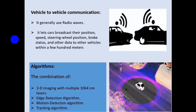Vehicle-to-Vehicle Communication. This is very important for communicating between vehicles on the road to prevent accidents. It generally uses radio waves. It lets cars broadcast their position, speed, steering wheel position, and brake status data to other vehicles within a few hundred meters.